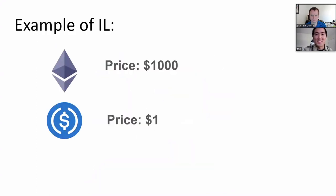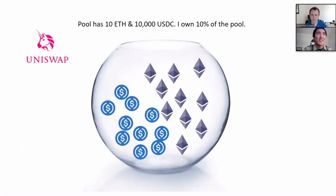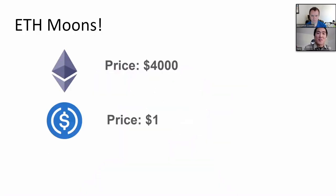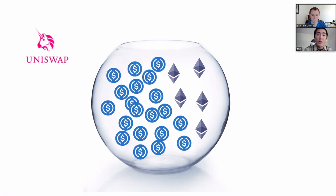Take this USDC/ETH liquidity pool. Say ETH is trading at $1,000. To provide liquidity you deposit a 50/50 ratio — so 1 ETH and 1,000 USDC. Let's say after I provide liquidity the pool has 10 ETH and 10,000 USDC — so I own 10% of the pool and am entitled to 10% of fees. Now let's say ETH moons to $4,000.